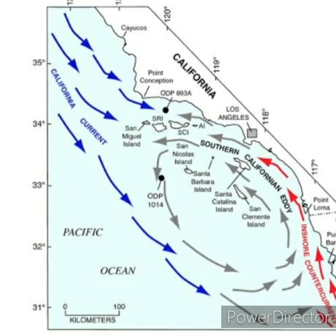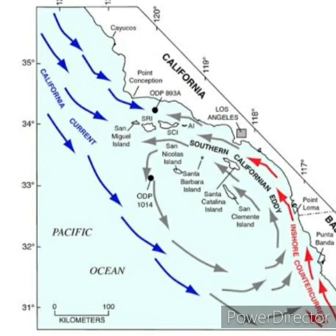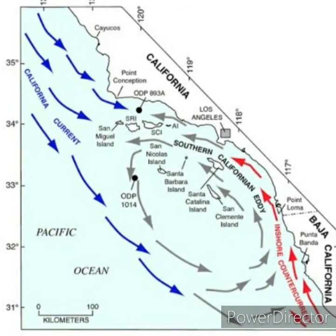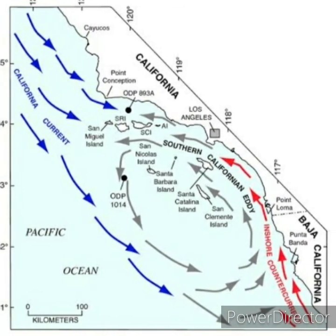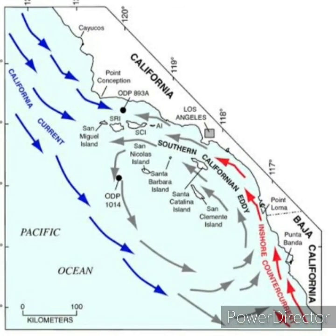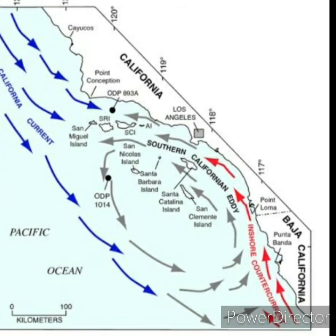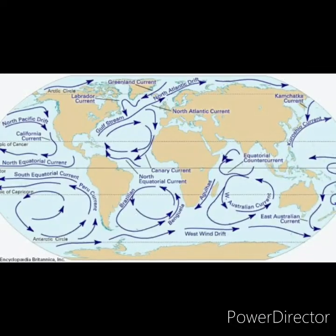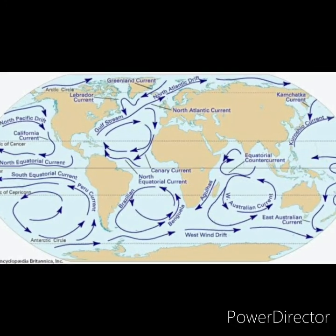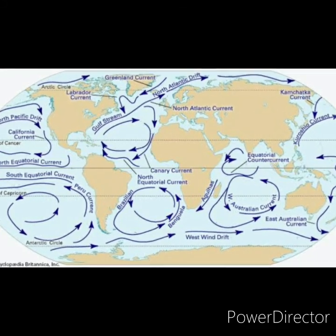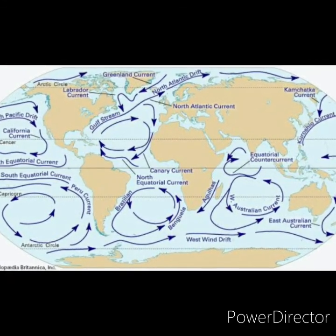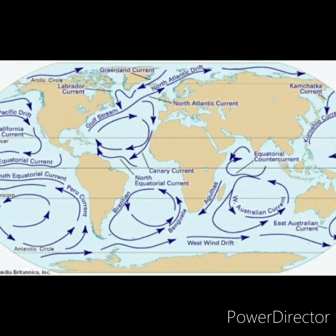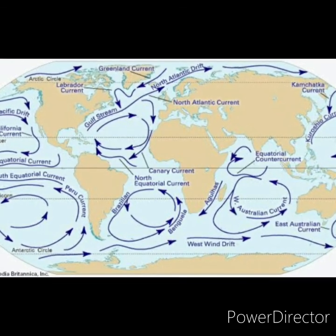The California cold current leads to foggy conditions along the coast of California and helped in the development of the Arizona and Sonoran deserts. In the Indian Ocean, the West Australian cold current leads to foggy conditions along the western coast of Australia, which helped in the genesis of the West Australian Desert.